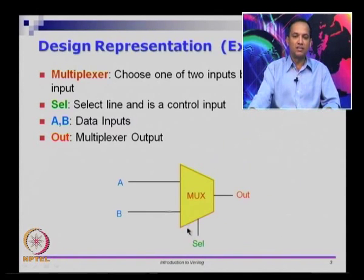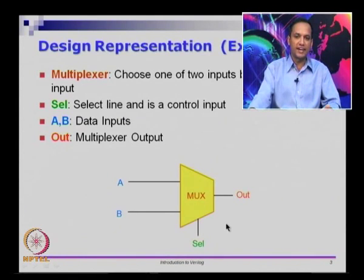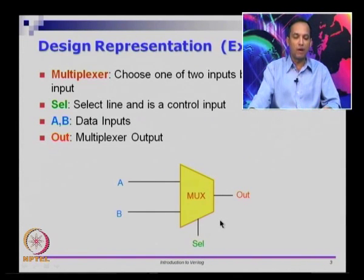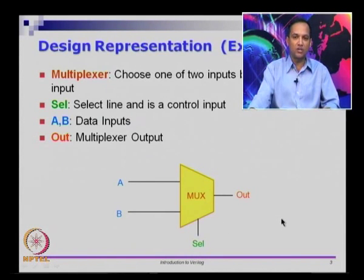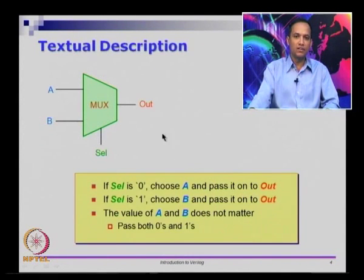This is a symbolic representation of a circuit — as an abstraction level, this is a symbolic representation. It is useful to see these pictures because as humans we understand pictures slightly more easily, but this is not something that a computer can work on — it is not something that you can manipulate as a symbol. This is a standard symbol for a multiplexer, just like the standard symbols for AND gate and OR gate.